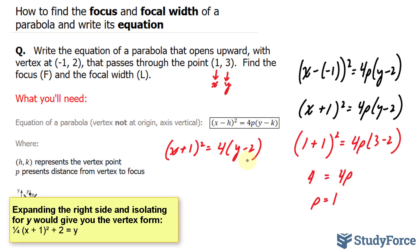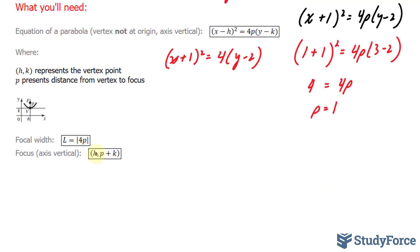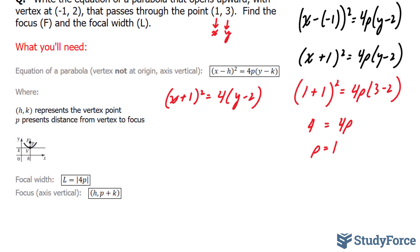Now we have to find our focus and our focal width. To find our focus, we'll follow this: the focus of a parabola opening upward is at (h, k + p). Your x coordinate of the vertex is h, which is -1, and your y coordinate will be p + k.